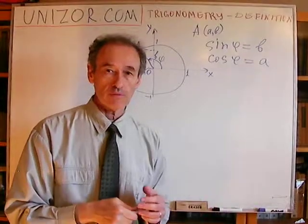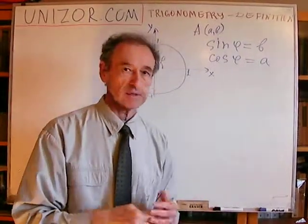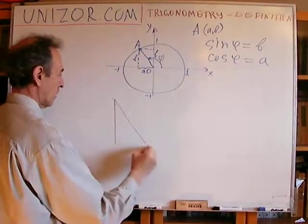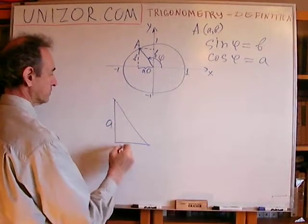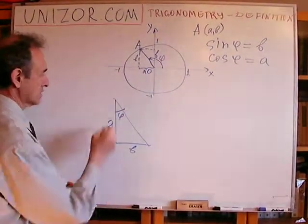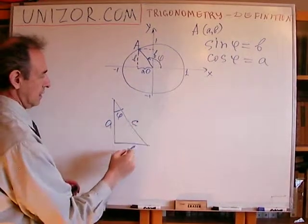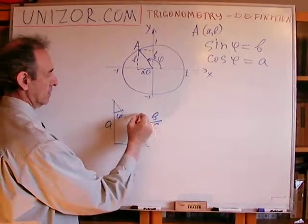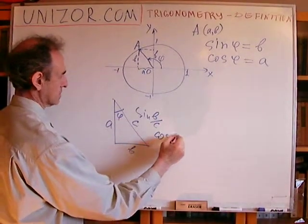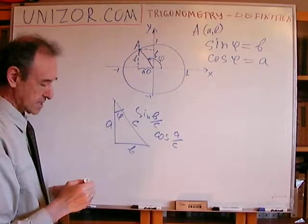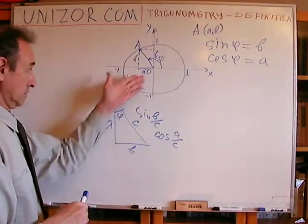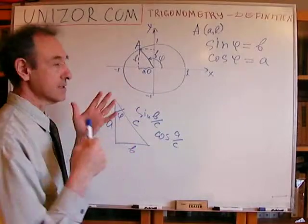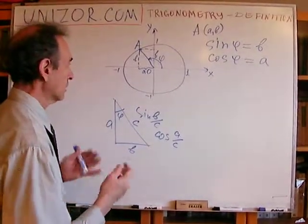Now, it's quite different from whatever I defined or explained in the previous lecture. I was drawing the right triangle and saying that sine of angle is the ratio B over C, and cosine is the ratio A over C. Now, is it different? Well, it's obviously different, but it's a natural expansion of that definition. Here is why.